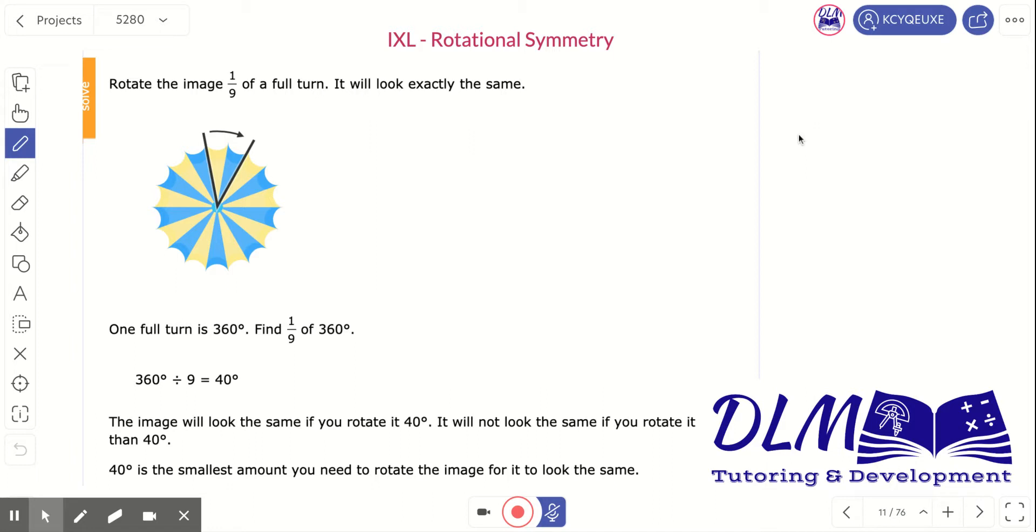So, if you're going to calculate the rotational symmetry of an image, you would need to first find out what does one section of that image look like. So, if we look here, it takes a yellow block and a blue block together to make one section. Then, if you count all of them to see how many of those sections are there, you would find out that there are nine.